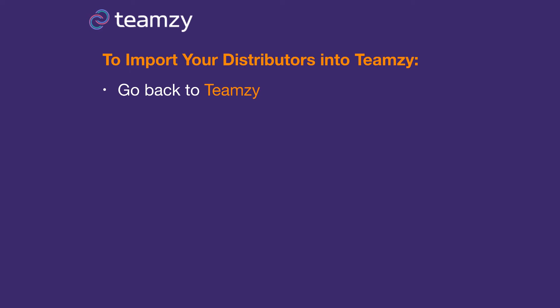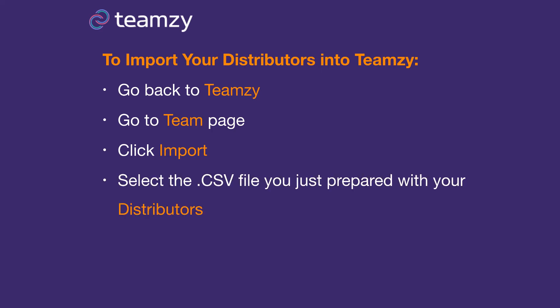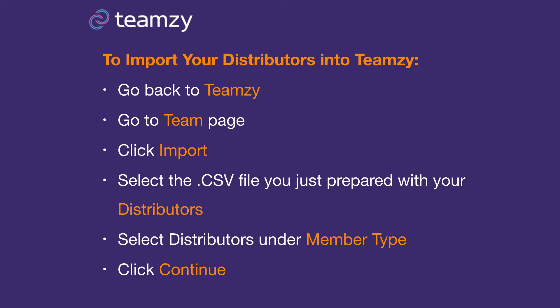Let's start with your distributors first. The reason we do distributors first is because we want to make sure if anybody's repeated, they go into the right category. Go back to Teamsy, go to the Team page on the left-hand side, and click on Import. It's going to ask you to find your file, so select the CSV file you just prepared with your distributors. Where it says Member Type, select Distributors — this will assign this list to your distributors list inside Teamsy. Then click Continue.